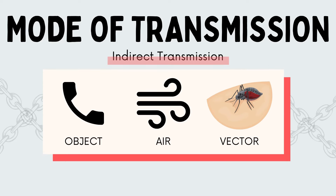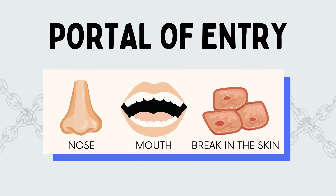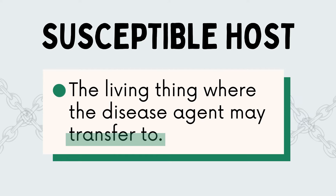The next link is portal of entry — this is where the pathogen gets inside the new reservoir. In the human body, the portal of entry can be the nose, mouth, or a break in the skin. Finally, the pathogen is transferred to a susceptible host, the person who can get sick when exposed to a pathogen, and this completes the chain of infection.